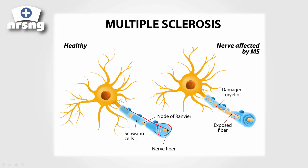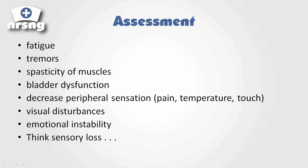What I want you to think about is sensory loss. With most diseases we've talked about throughout this course, there's usually one thing we can focus on to help identify everything. With MS, you need to think sensory loss. Neurons help provide sensory information.